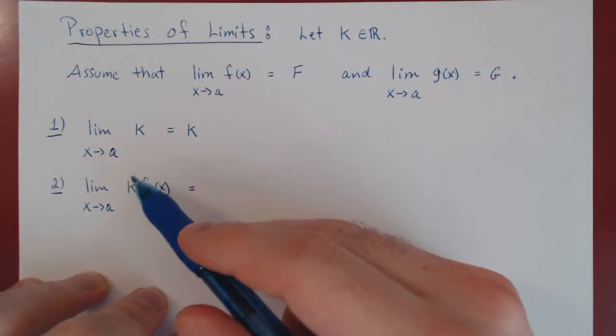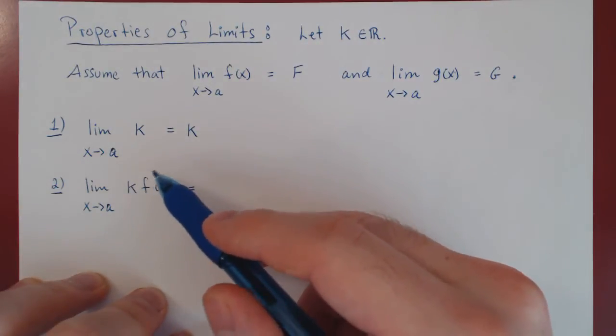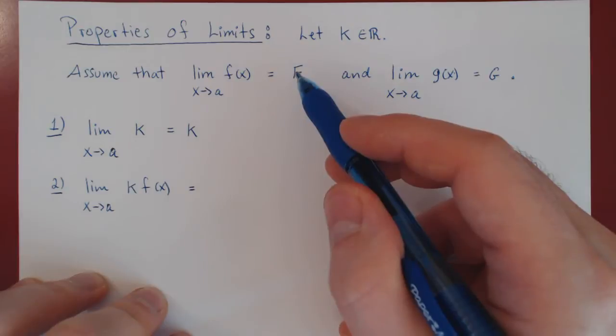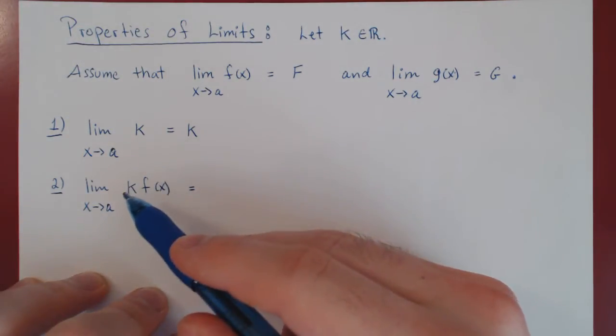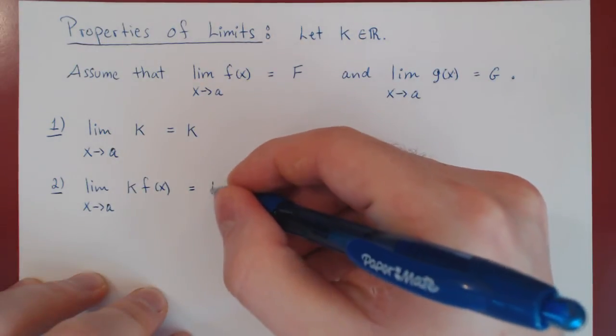Well if you think of it as x is approaching a, we know that f of x is approaching uppercase F. As k is a constant, k always remains k. So as f of x is getting closer and closer to F, k times f of x will be getting closer and closer to k times F. And that's it.